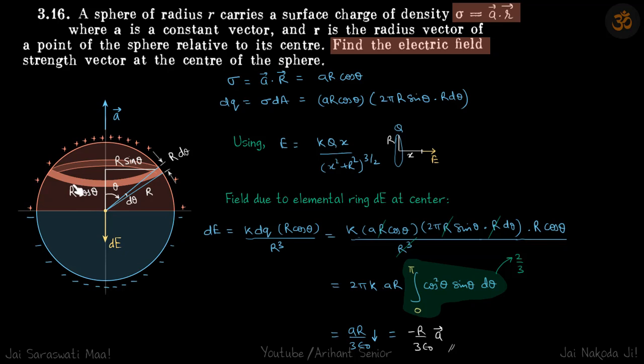So on this ring everywhere the value of r⃗·a⃗ is going to be the same and that is ar cos θ. Sigma is the same everywhere, that is ar cos θ on this ring only. So we can find the charge on this ring and then we can find the small field dE due to that ring because we know the formula for the field.